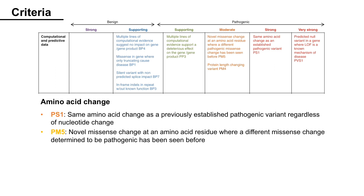Next, variants that cause amino acid changes: PS1 can be assigned when the same amino acid change was previously established as pathogenic, regardless of nucleotide change. PM5 is for variants with a novel missense change at an amino acid residue where a different missense change determined to be pathogenic has been seen before.